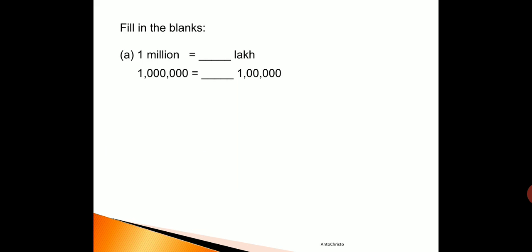Now the easiest way of finding the answer is striking the zeros from the one's place on the right. I am striking: first zero on the right side, then the corresponding zero on the left. Second zero, second zero. Third zero, third zero. Fourth zero, fourth zero. Fifth zero, fifth zero. Now there are no zeros left to be removed on the lakh side — all zeros are already removed. So what is left? One zero, that is ten. So one million is equal to ten lakh. I hope you understood this.